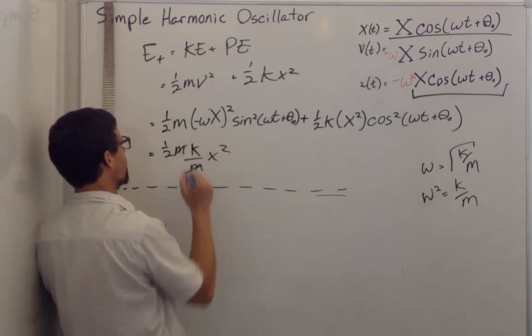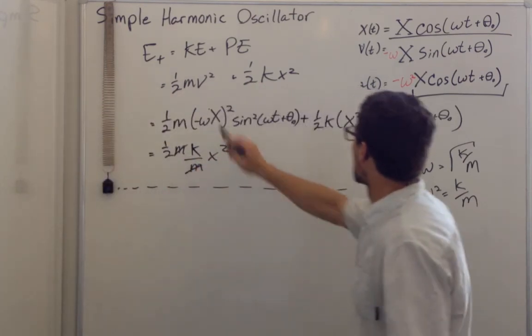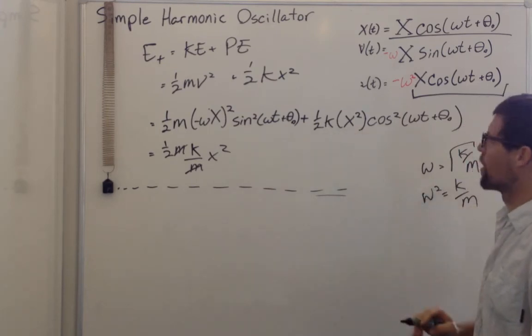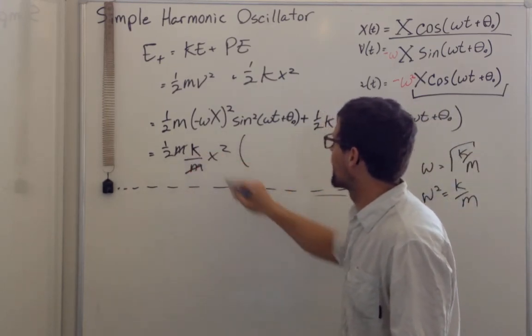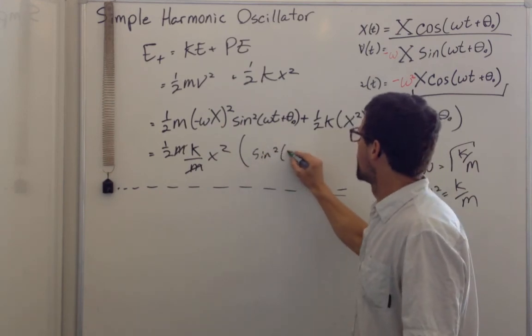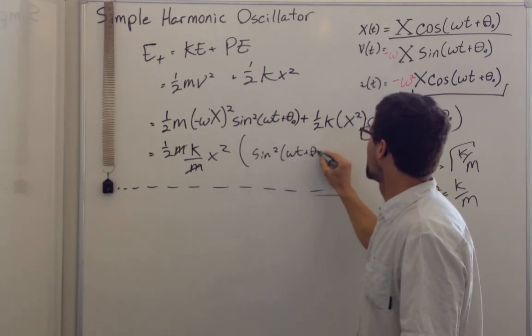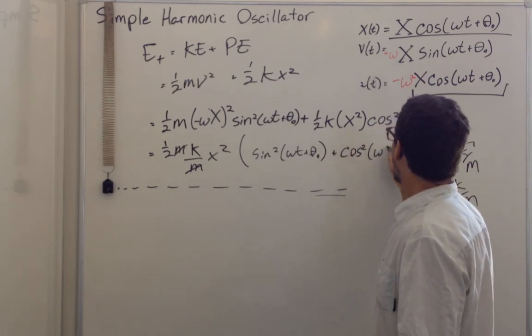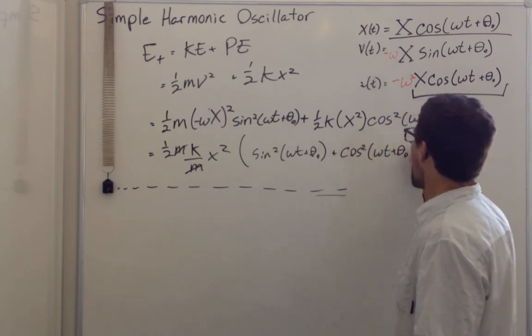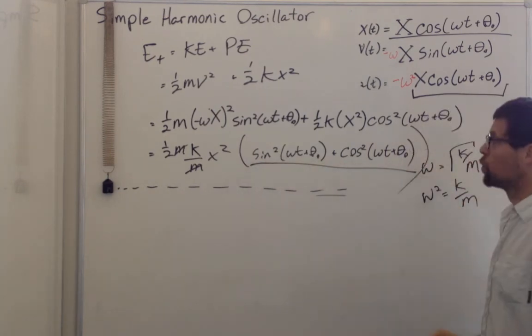And now I have one-half kx squared and one-half kx squared here. And so this is equal to one-half kx squared times sine squared omega t plus theta naught plus cosine squared omega t plus theta naught. So this is one.